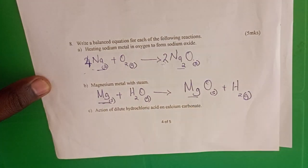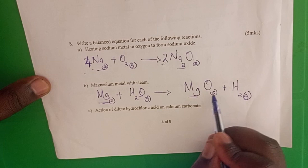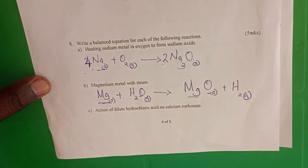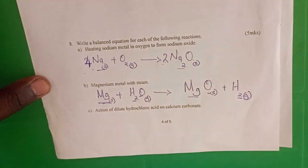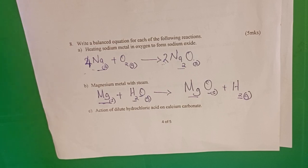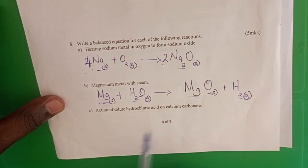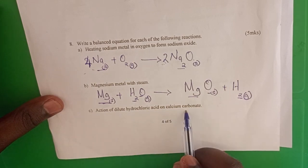We balance: one magnesium on each side, one oxygen on each side, and two hydrogen on each side — two hydrogen. So that equation is balanced as written.